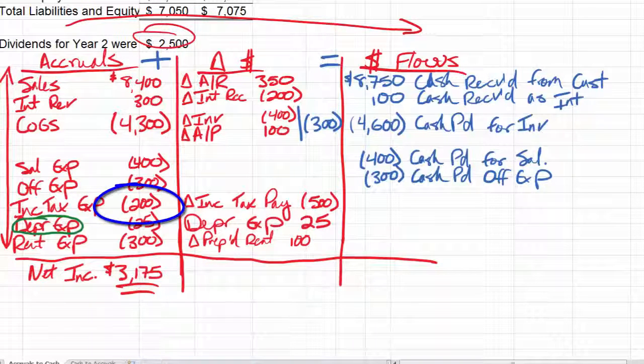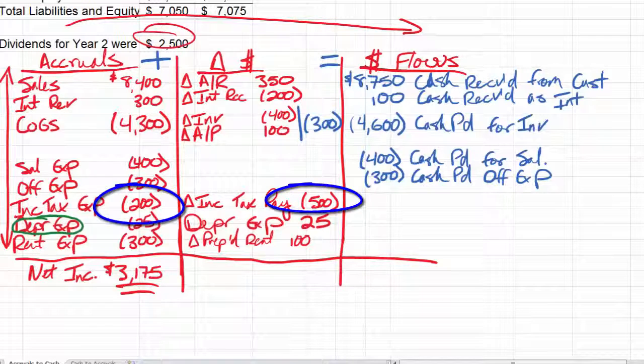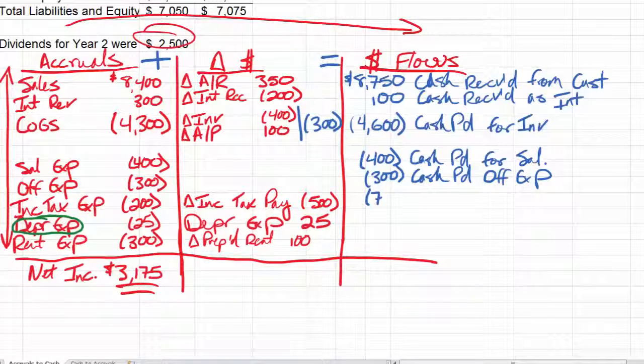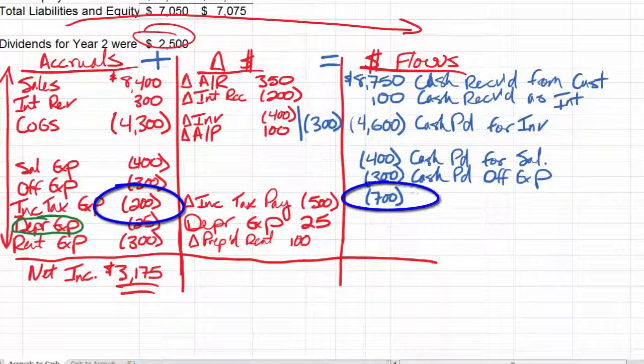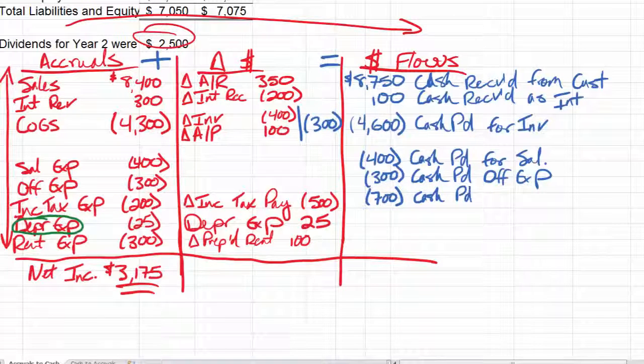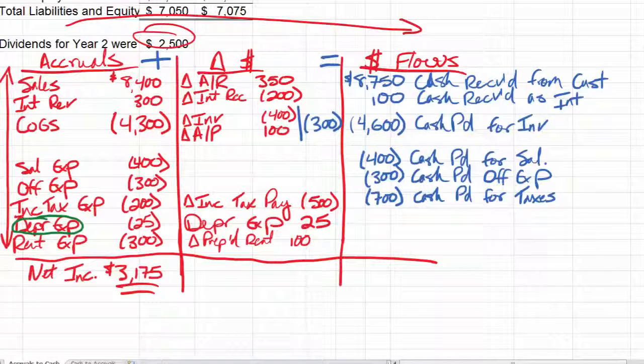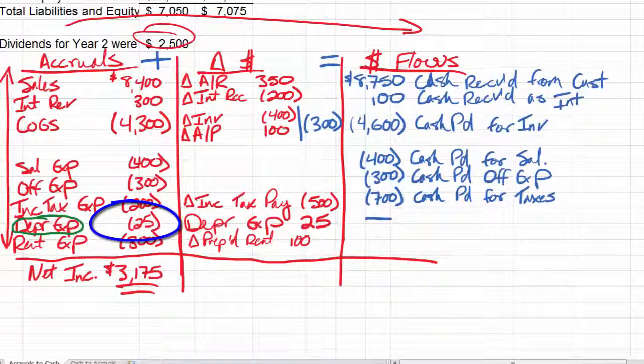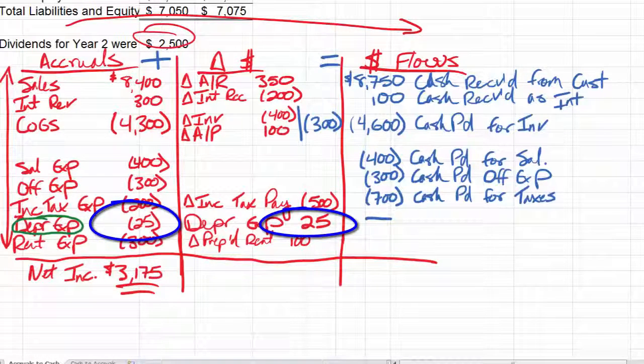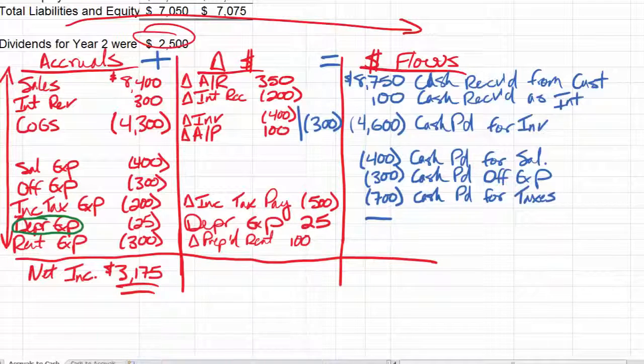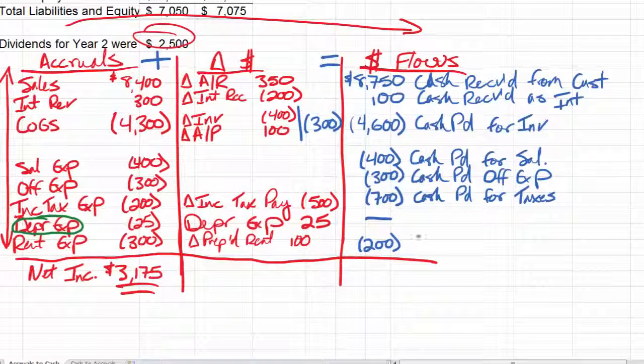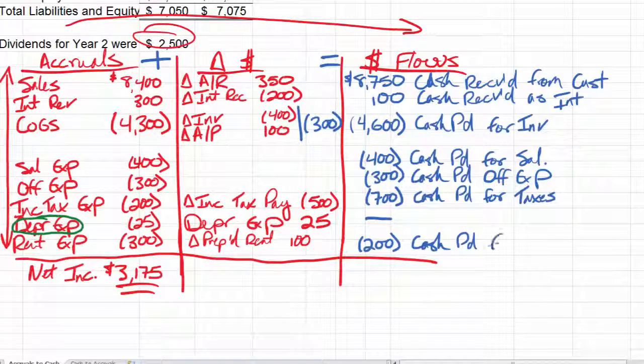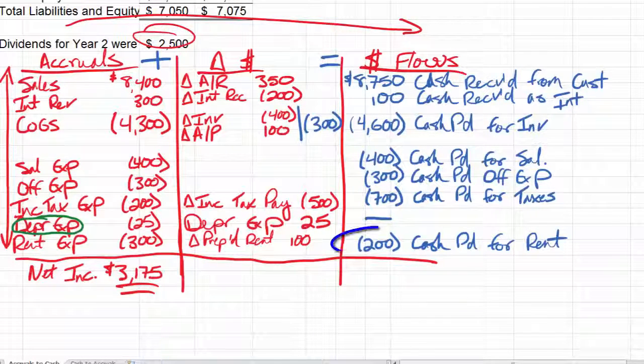Income taxes, this year we owe 200, but we had to pay a bill from last year. So overall, even though we only accrued $200 based on this year's profit, we paid $700 for taxes. Depreciation should be zero, and it is negative 25 plus 25 gives me zero. There's no cash for depreciation. Rent expense, negative 300 plus a positive 100 gives me negative 200, so my cash paid for rent is only $200.